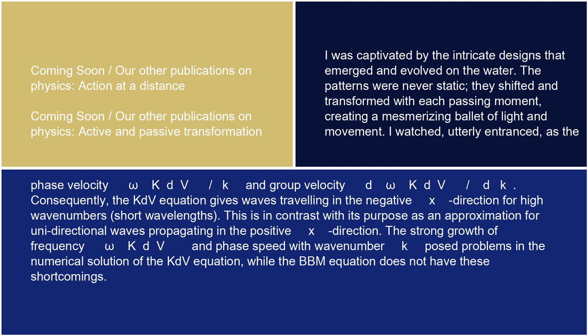Consequently, the KdV equation gives waves traveling in the negative x direction for high wave numbers (short wavelengths). This is in contrast with its purpose as an approximation for unidirectional waves propagating in the positive x direction. The strong growth of frequency ωKdV and phase speed with wave number k pose problems in the numerical solution of the KdV equation, while the BBM equation does not have these shortcomings.